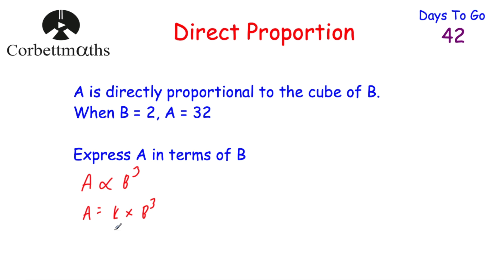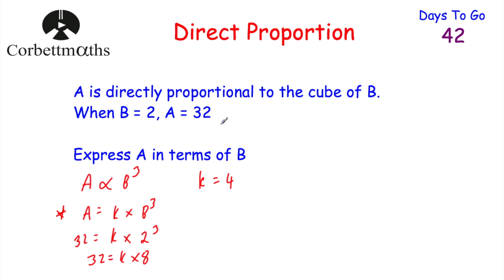So let's start by writing down what we've been given: A is directly proportional to the cube of B, so A is proportional to B cubed. We get rid of the proportion symbol and put in K: A is equal to K multiplied by B cubed. We're told that whenever B equals 2, A equals 32. Substituting in: 32 is equal to K multiplied by 2 cubed. 2 cubed is 8, so 32 equals K multiplied by 8. Dividing both sides by 8 gives K equals 4. Replacing K with 4: A is equal to 4B cubed. That's our answer — we've expressed A in terms of B. Well done if you got that.